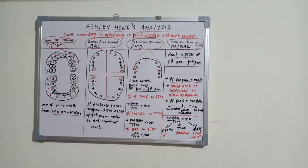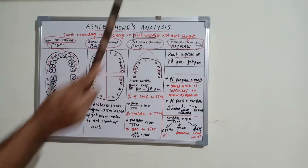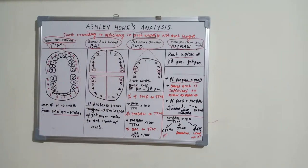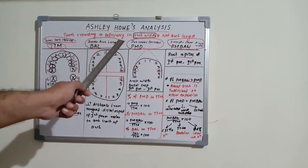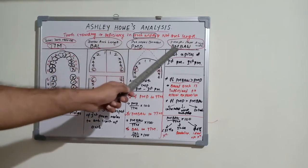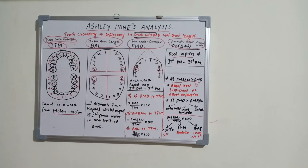In summary, Ashley's analysis is based on the arch width concept, not arch length. It has four parameters: total tooth material, basal arch length, premolar diameter, and premolar basal arch width. The percentage thresholds guide extraction decisions. Thank you, and I will come up with another topic in my next video.